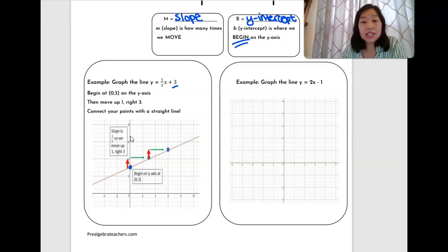and then this is going to tell us how many times to move. The numerator always tells us how many times to move up or down depending on if it's positive or negative and in this case we're going to move up because it is a positive one and then three is going to tell us how many times we're going to move to the right.